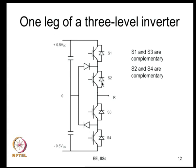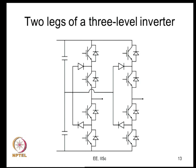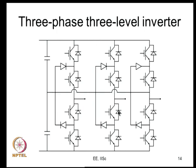In one leg of the three-level inverter: when S1 and S2 are on, R is connected to the positive; when S3 and S4 are on, R is connected to the negative; when the middle two are on, R is connected to the midpoint. S1 and S3 are complementary; S2 and S4 are complementary. PWM requires generating signals for S1 and S2 — then S3 and S4 can be generated as their complements respectively.